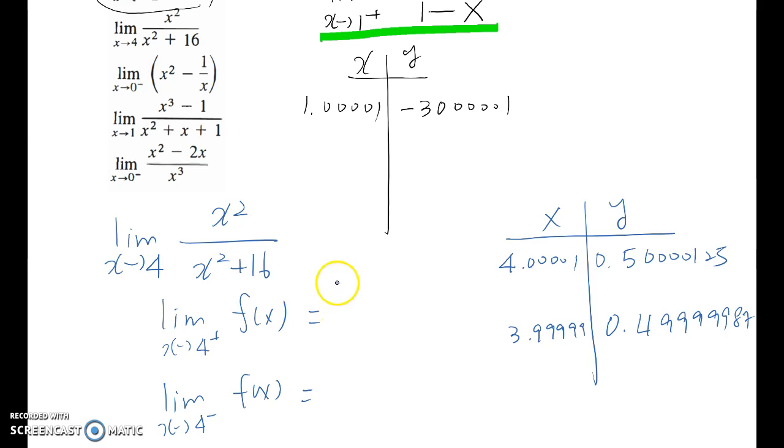On the positive side, we checked it, this is 1 over 2. Also negative side, also 1 over 2. Therefore, this limit becomes 1 over 2.